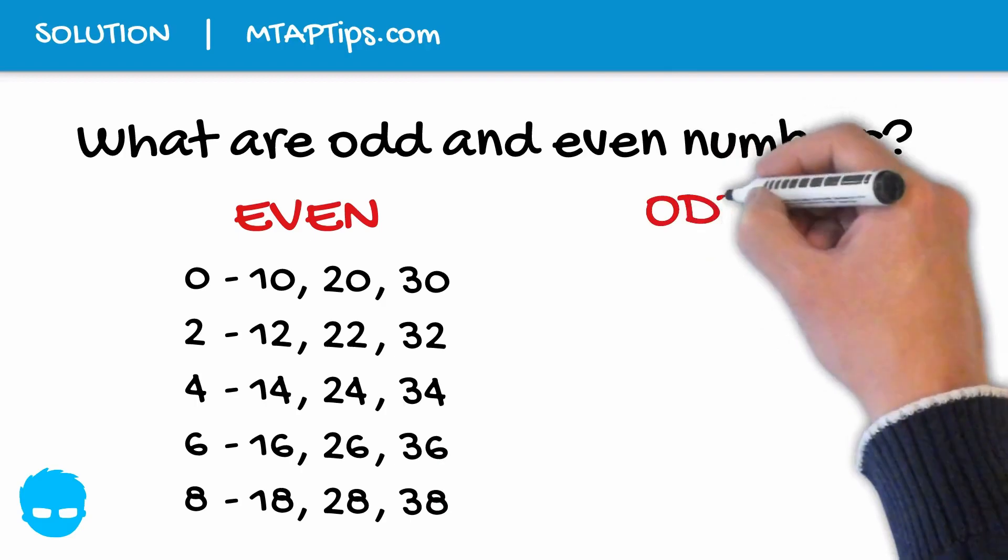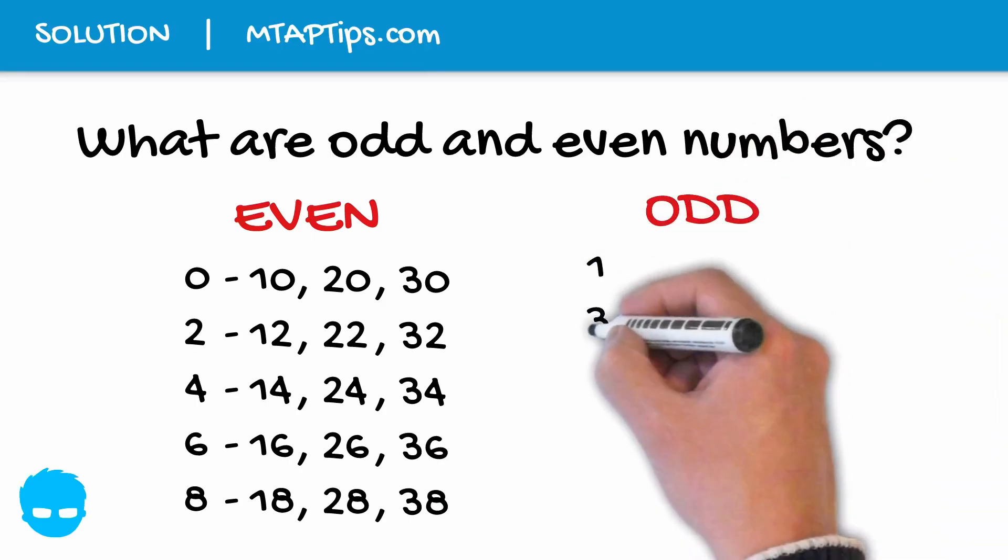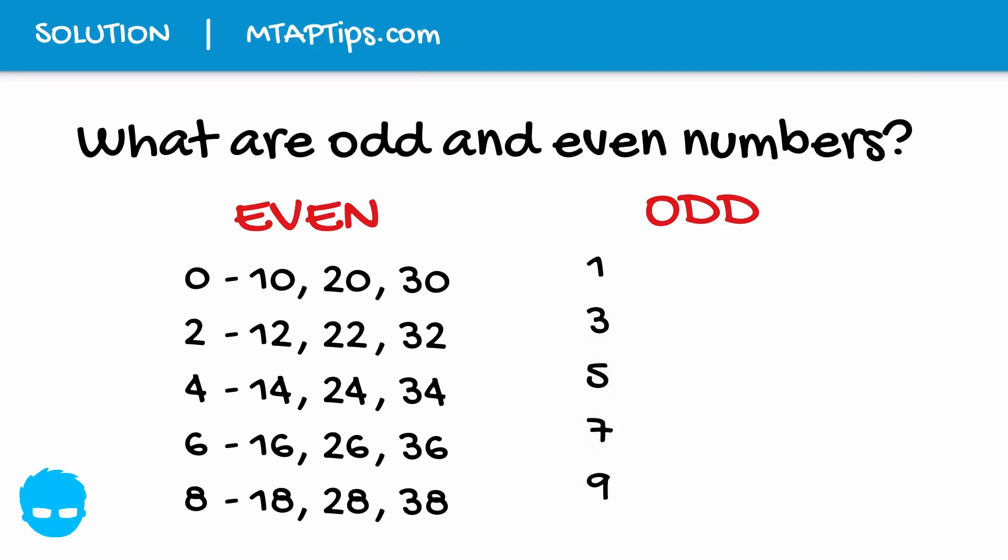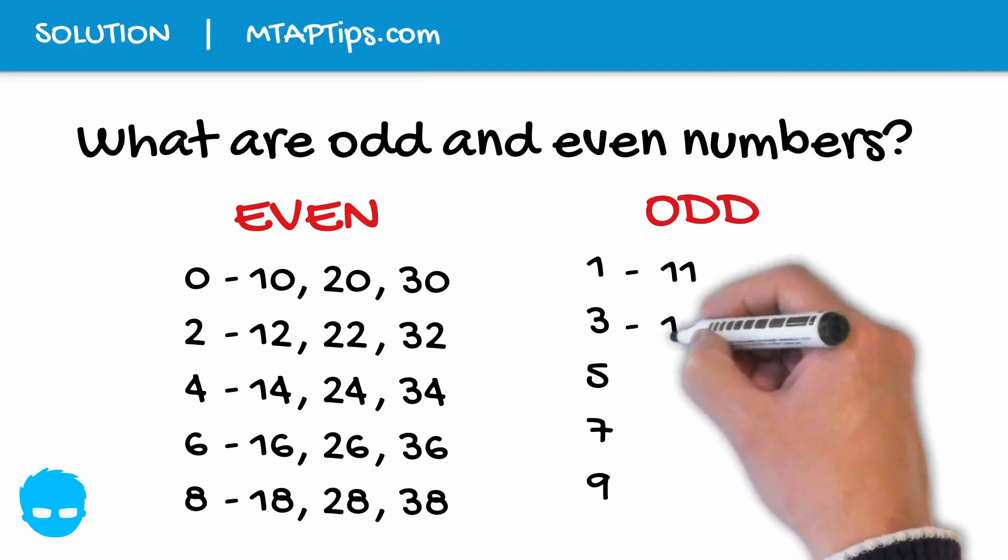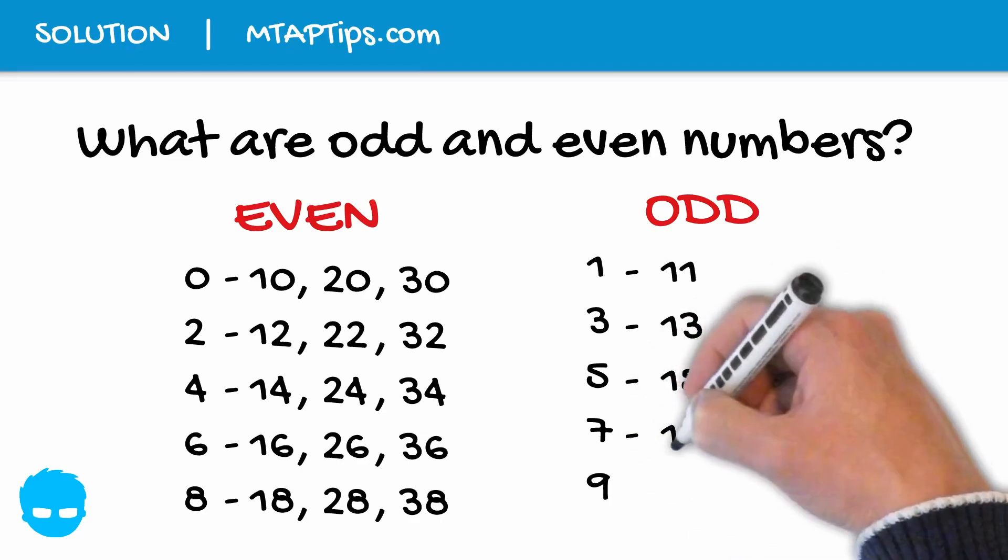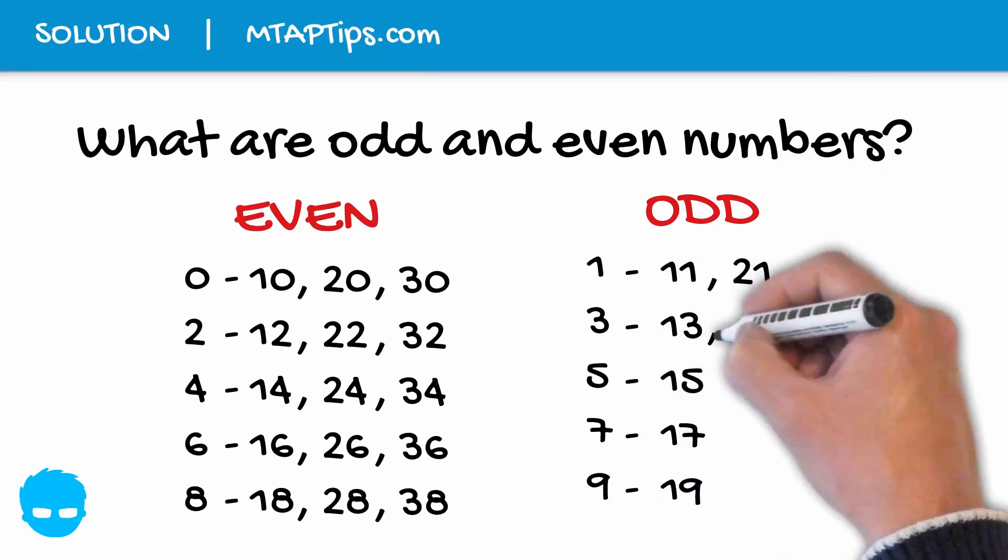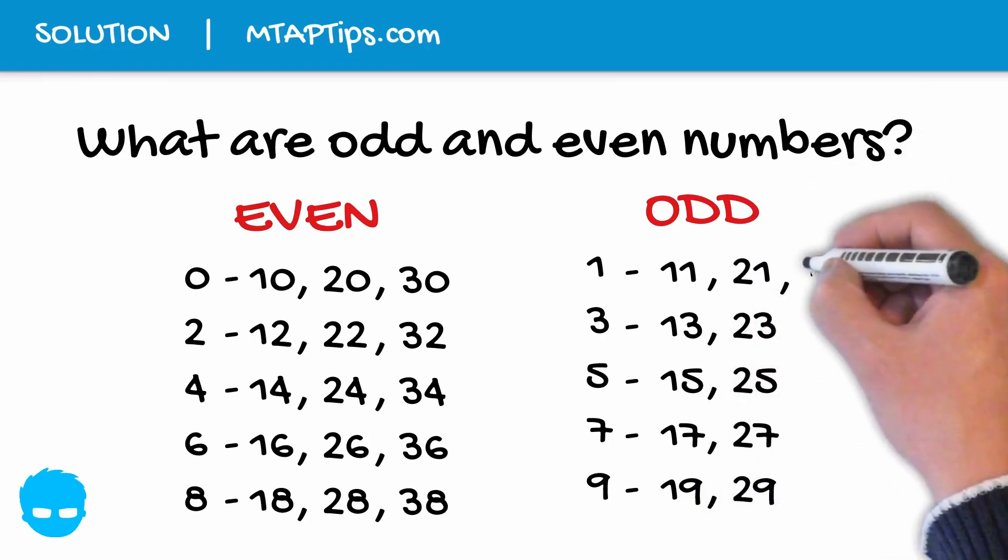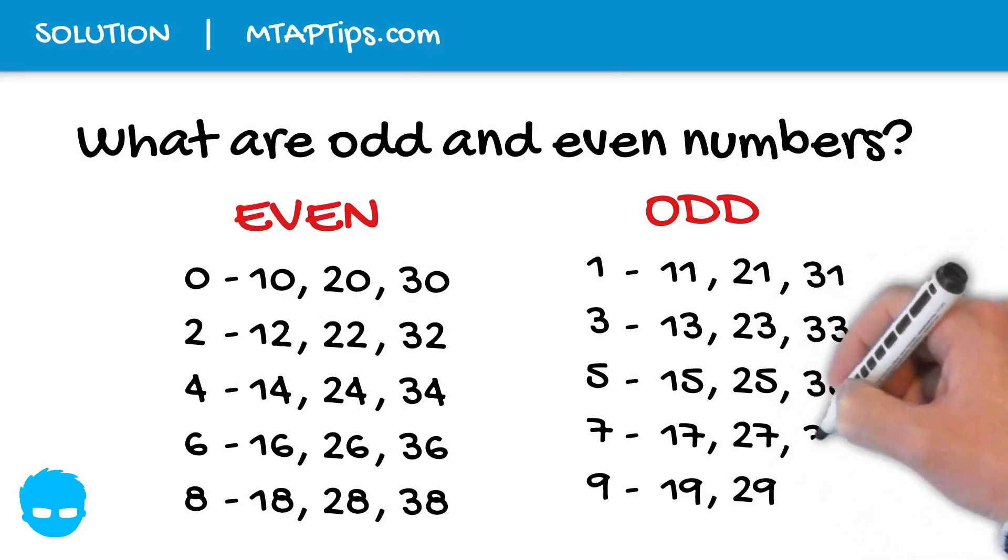Odd numbers are numbers that end with 1, 3, 5, 7, and 9. These are the single-digit odd numbers. Other examples are 11, 21, 31 or 13, 23, 33 or 15, 25, 35, and so on.